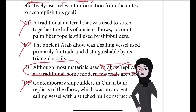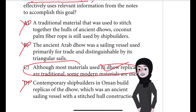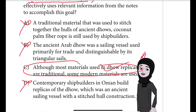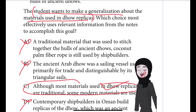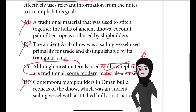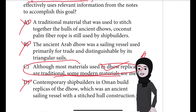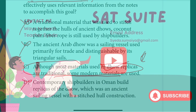Choice D is incorrect. The sentence introduces the construction of Dhaw replicas to an audience unfamiliar with the vessel. It doesn't make a generalization about the materials used in those replicas. This one is quite easy because we are just focusing on a generalization about the materials used in Dhaw replicas — most materials used are traditional and some modern materials are also used.